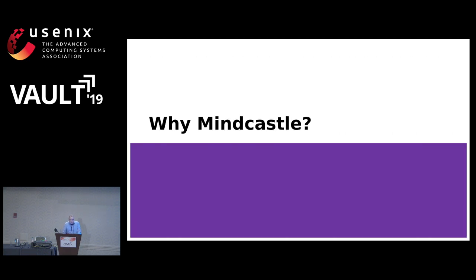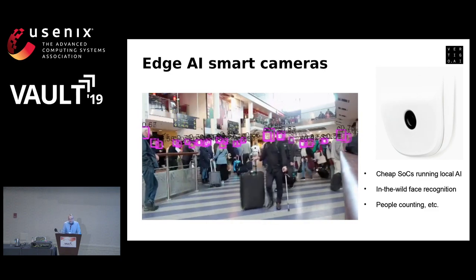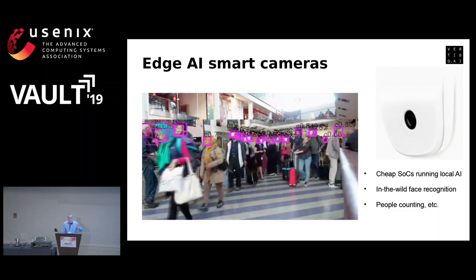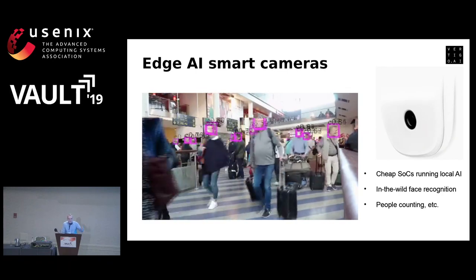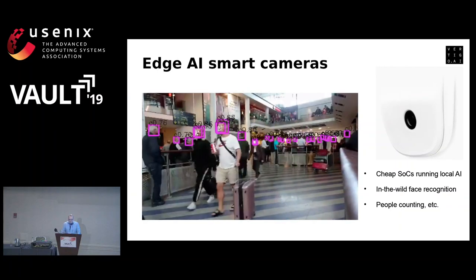Let me tell you a little bit about why we are building MindCastle and what we're using it for. ReadyGo is working on Edge AI. We're building smart cameras like the one pictured on the right that can be used for stuff like counting people in a room, face recognition, and so on. We're working with a hardware maker who are shipping these small cameras that are basically like a souped-up Raspberry Pi with a camera and a nice box outside.